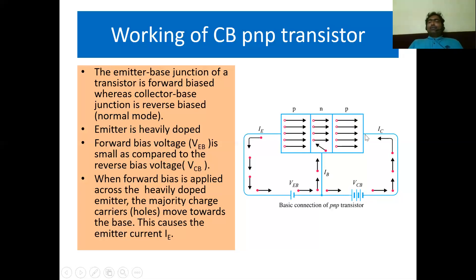As a hole reaches the edge of the P-region, an electron from the negative terminal of the battery recombines with that hole. In this way, in the P-region, electron-hole pairs are produced due to the breaking of covalent bonds, and electrons recombine with holes at the edge of the collector region. In this way, the PNP transistor works in common base configuration. Thanks for watching.